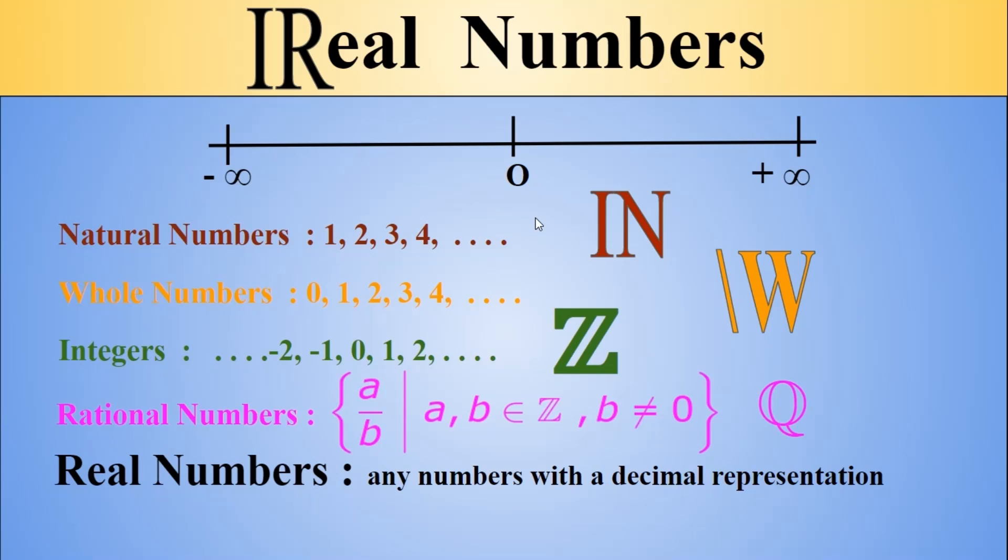That allows me to talk about, say, 5, right? because 5 is of course like 5.000 dot dot dot or I can certainly talk about pi which is 3.1415. Everything like this which has some decimal representation is a real number.